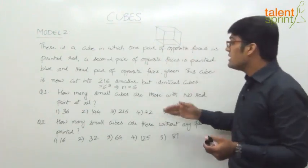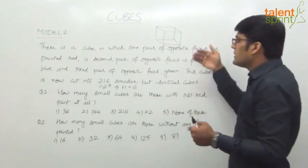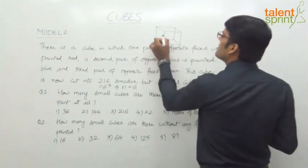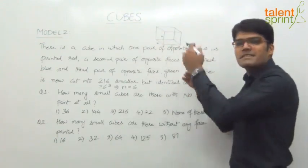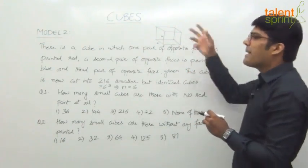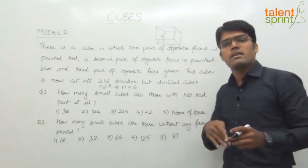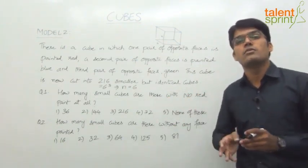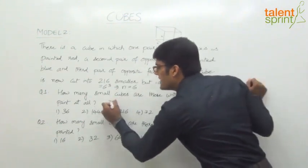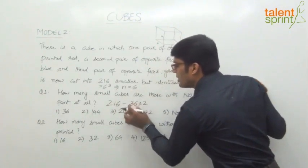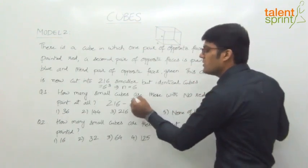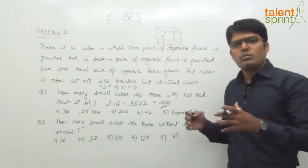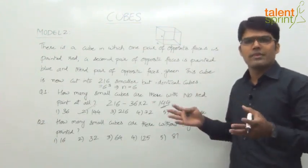Are you able to follow? The remaining cubes can be considered. The question says there should be no red paint, so I will remove the red painted faces. There are 216 cubes, and on each face there are 36 cubes — 6 by 6. So we are removing the front face and the back face: 36 cubes per face, 2 faces removed, that is 72 removed. 216 minus 72 equals 144. The answer for question 1 is 144. Likewise, if it says no blue paint, remove those 2 blue faces. No green paint — remove those 2 faces. It's as simple as that.